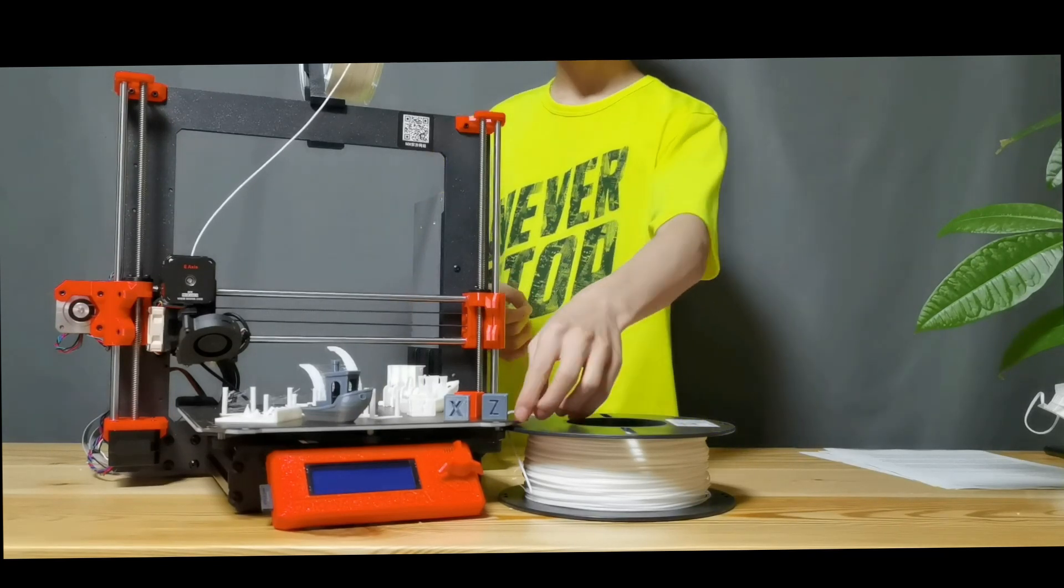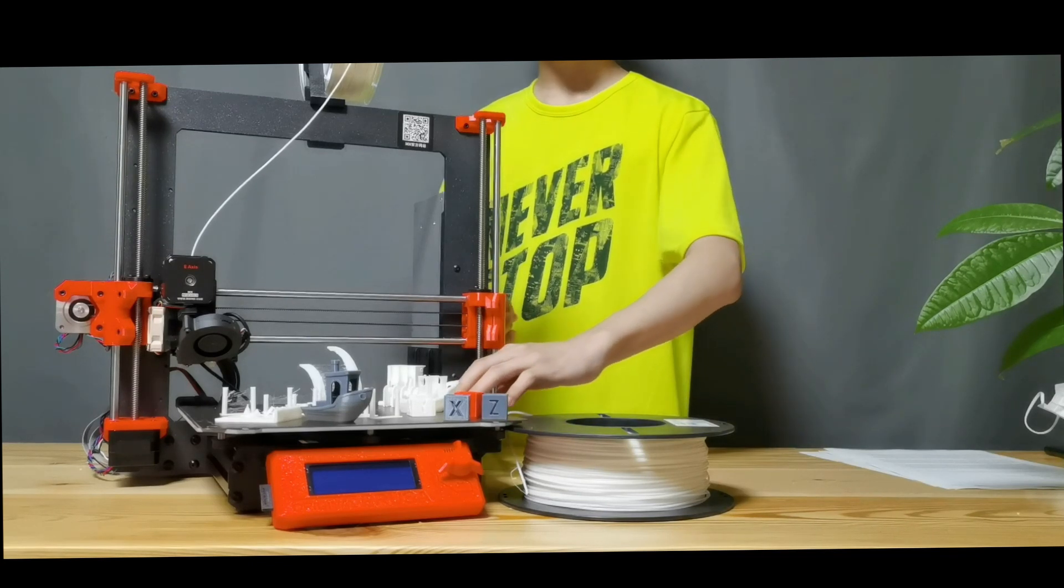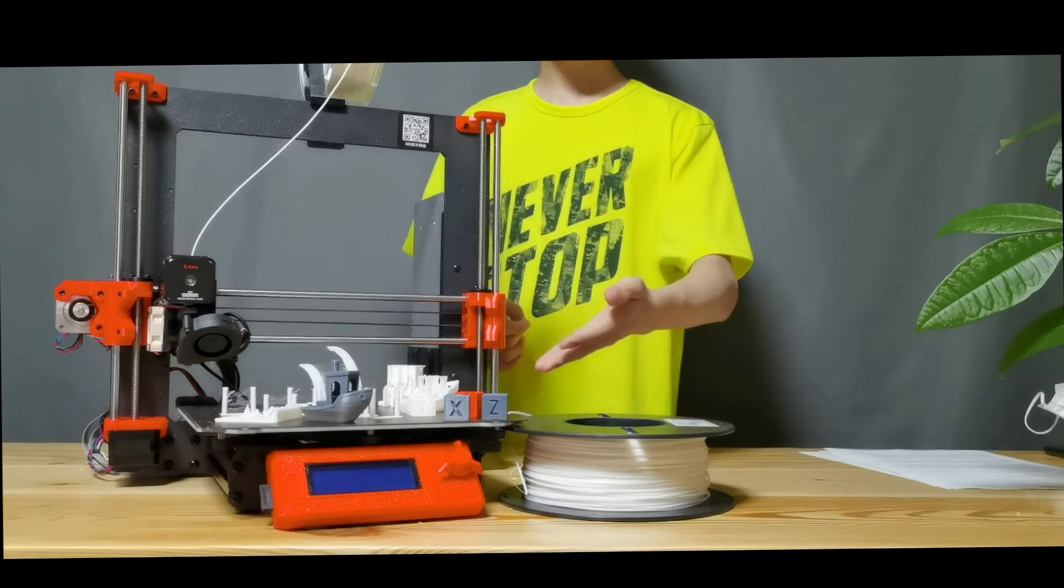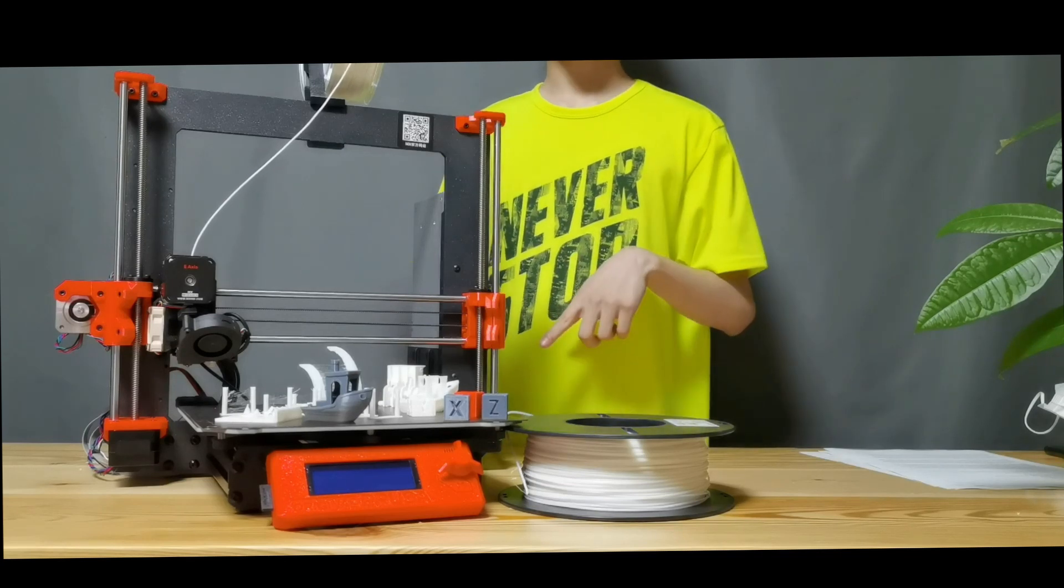And it has a bunch of magnets embedded in it so it can keep this large steel flex sheet on there. Talking about this steel build plate, this is actually textured. So one side is textured, one side is smooth.